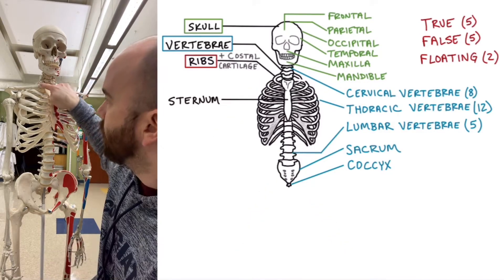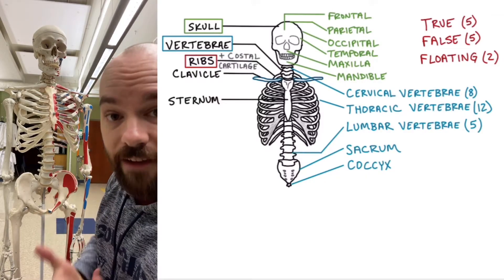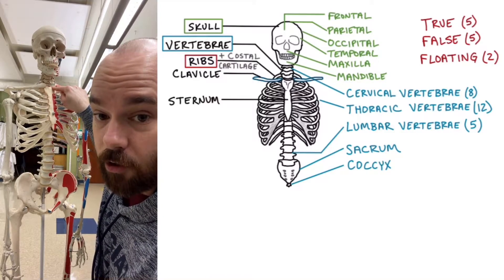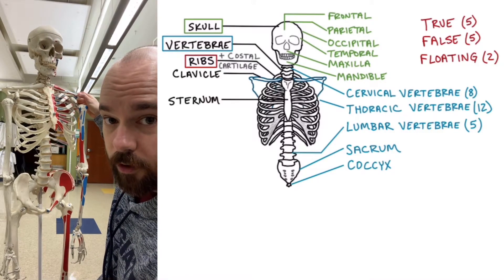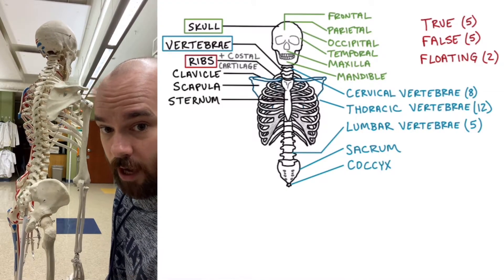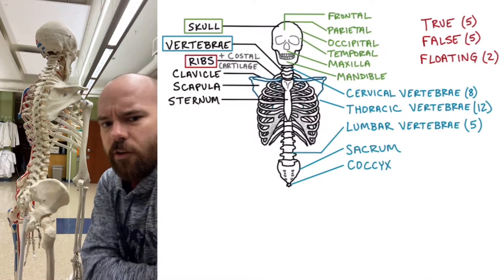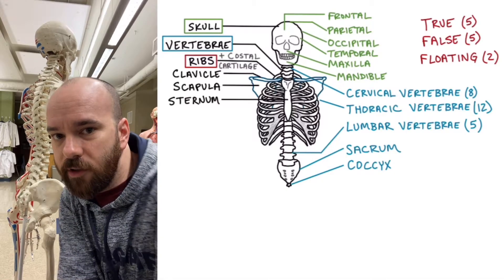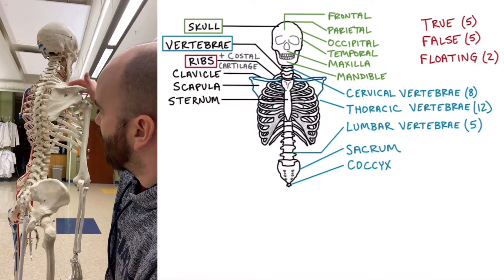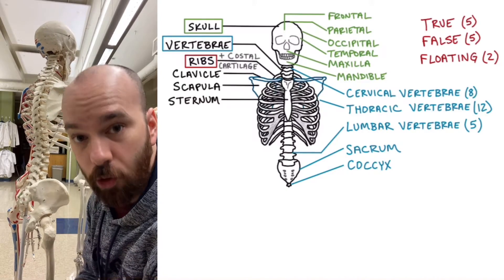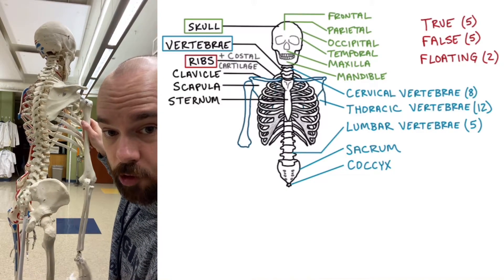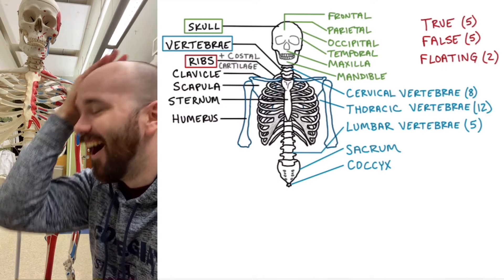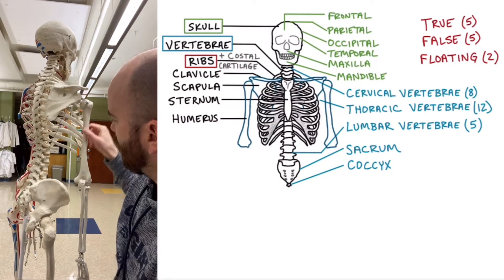We'll start with the shoulder and the arms. These two bones right here are your collarbones or clavicles. You can feel your clavicle right there on your neck. They connect from the sternum to your shoulder blades, which are called your scapula. Your scapulas are posterior to your ribs, and they sort of slide around — you can feel your scapula sliding if you move your shoulders. Your scapula and your clavicle combined are known as the pectoral girdle, and they form a joint with this bone, the humerus.